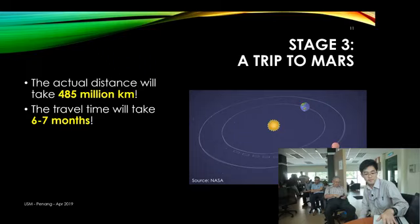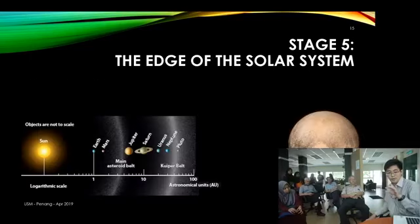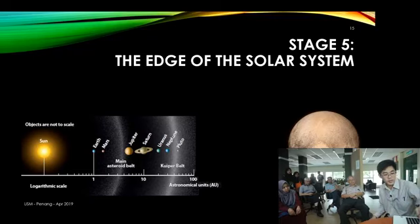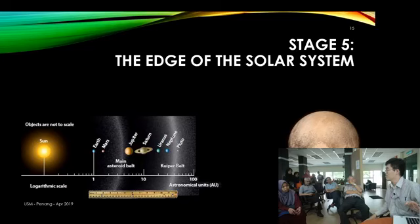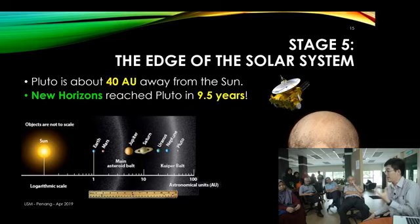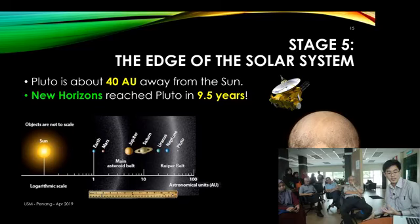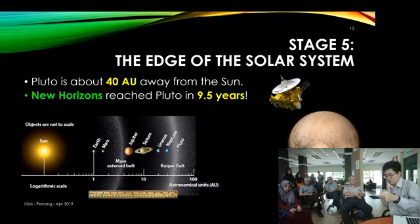Instead of going outwards, let's try going inwards — we go to the Sun. But actually, let's think about going all the way to Pluto. Pluto is actually a dwarf planet. Recently we have a very beautiful image of Pluto — we found out that Pluto was actually red. In the past pictures it appeared grayish, but when we got a close-up look, we found it's a beautiful red planet. Pluto is about 40 astronomical units away from the Sun, so it will take 40 times the distance from Earth to the Sun to get all the way to Pluto.